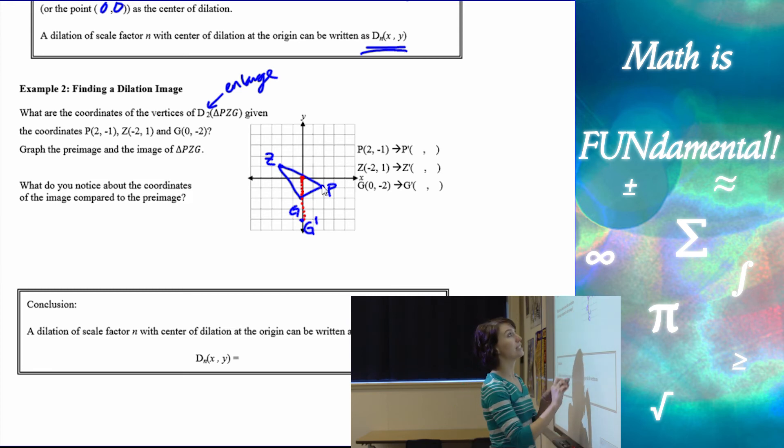Again, my distance from the origin to P is going to double. We can use slope if you think about it this way. I went down 1 over 2. I need to go down 1 over 2 again to double that in order to get to my P prime.